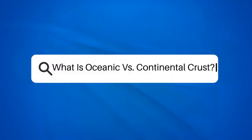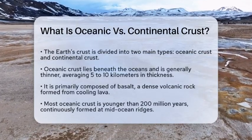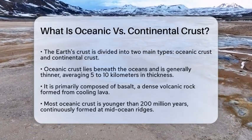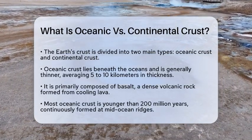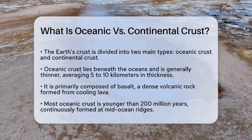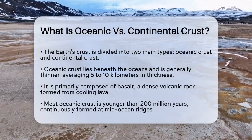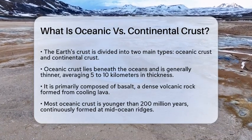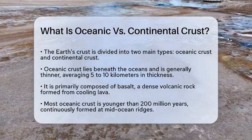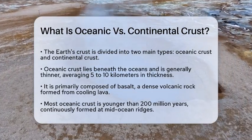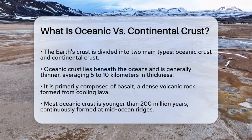What is Oceanic Versus Continental Crust? Imagine standing on a beach, feeling the sand beneath your feet and the waves crashing nearby. Have you ever wondered what lies beneath the surface of the ocean and the land? The Earth's crust is divided into two main types: Oceanic Crust and Continental Crust. Each type has its own characteristics and plays a different role in the planet's geology.